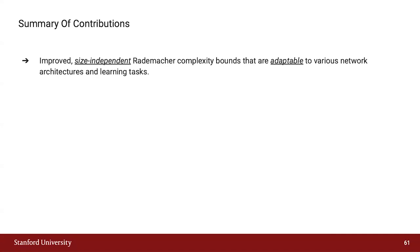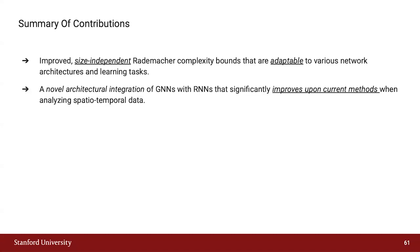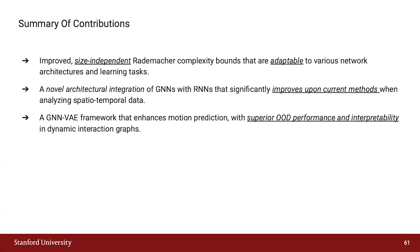Here's what we've talked about. We have developed improved Rademacher complexity bounds for graph neural networks. These bounds are size independent and adaptable to various network architectures and different loss functions. Next we introduced novel architectures integrating graph with recurrent neural networks for analyzing spatial temporal data. Our approach more effectively captures spatial dynamics alongside temporal processing. We also developed a GNN based variational autoencoder which enhances motion prediction and exhibits superior performance in out-of-distribution scenarios and interpretability. Lastly, we covered graph neural networks within the framework of reinforcement learning, specifically for combinatorial optimization tasks. Our method approaches performance of state-of-the-art solutions while only scaling logarithmically with problem size.